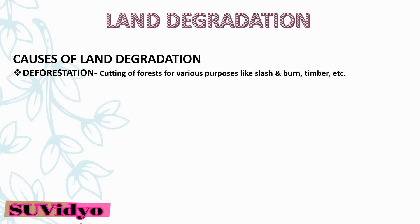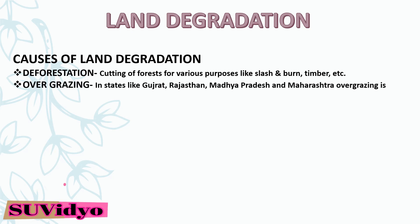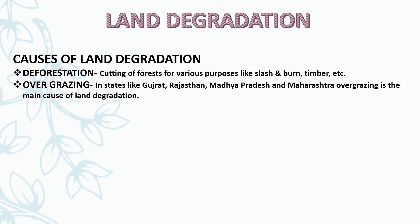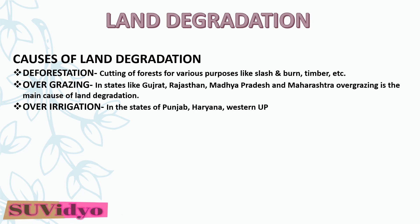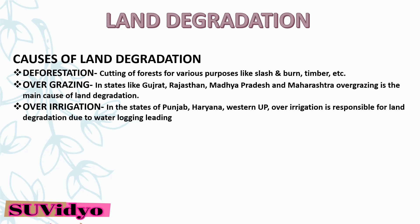Deforestation means cutting of forests for various purposes like slash and burn, timber, etc. In the states of Gujarat, Rajasthan, Madhya Pradesh and Maharashtra, overgrazing is the main cause of land degradation. In the states of Punjab, Haryana and Western UP, over-irrigation is responsible for land degradation due to waterlogging, leading to increase in salinity and alkalinity in the soil.